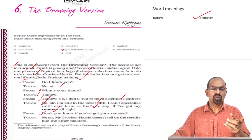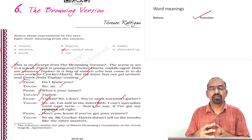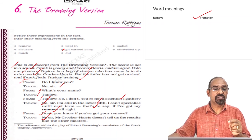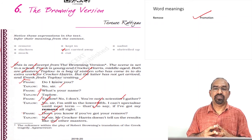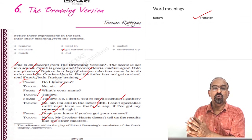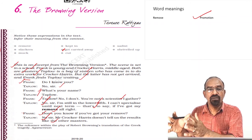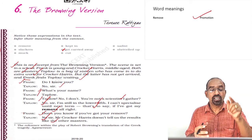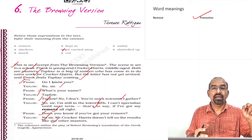Frank asks, 'Why not?' Taplow says, 'Well, you know what he is like, sir.' Frank recollects the school rule that form results should only be announced by the headmaster on the last day of term. Taplow replies, 'Yes, but who else pays attention to it except Mr. Crocker-Harris?' Frank admits he does not keep results till the end of term either, but that is no criterion. He tells Taplow he has got to wait until tomorrow to know his fate.